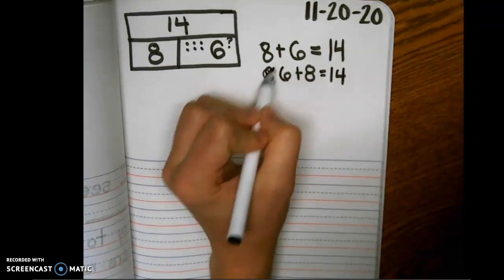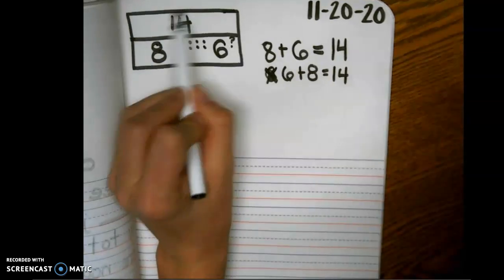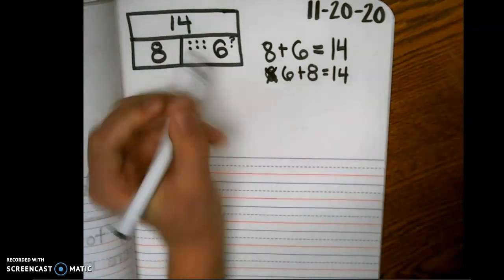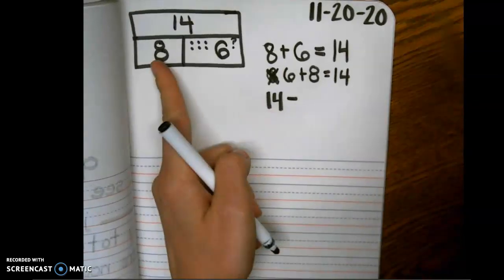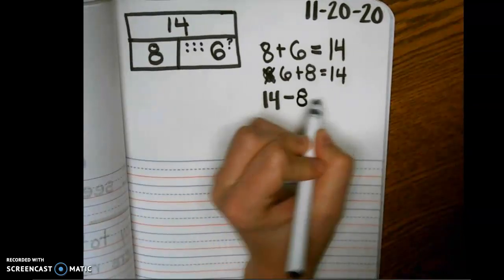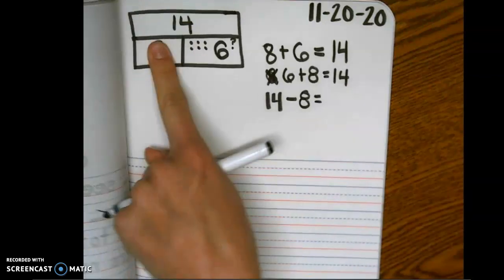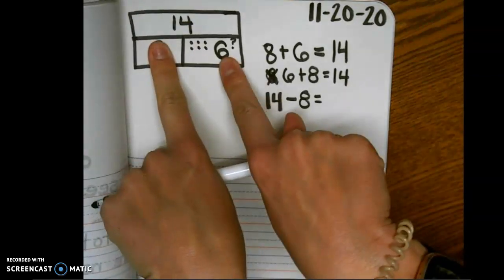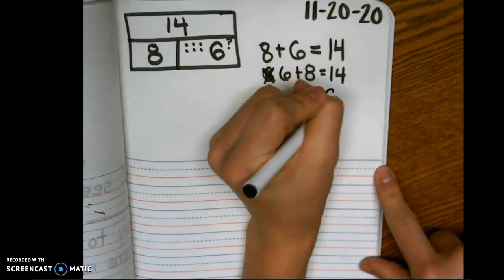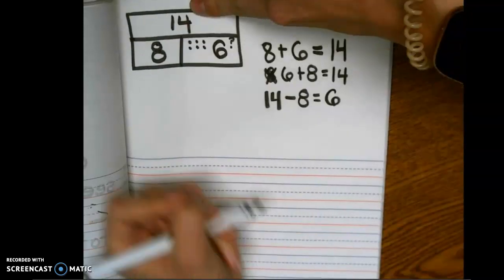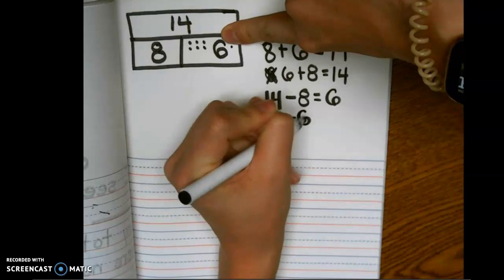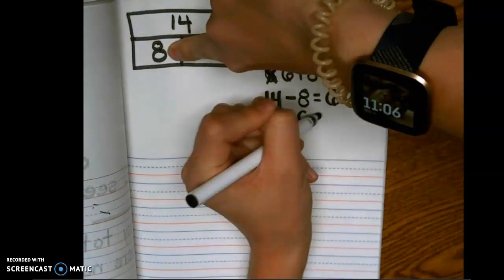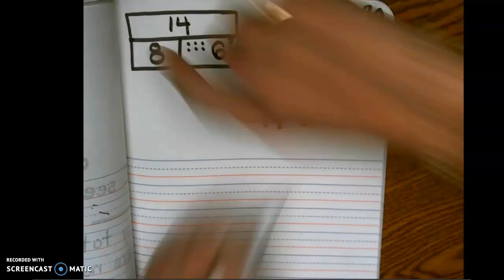Well then I can write my subtraction sentences. When we subtract we start with the whole, so then I can write 14 take away 8. I have 14 and I take away 8, what number do I get? 6, great job! And then if I have 14 again and I take away 6, what does that equal? It equals 8.